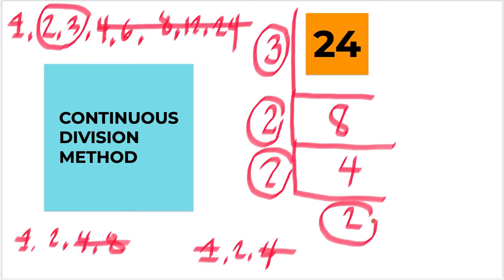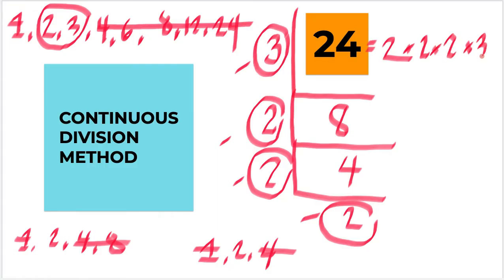Here are the prime factors: 2, 2, 2, and 3. So the prime factors of 24 are 2 times 2 times 2 times 3. Let's check: 2 times 2 is 4, times 2 is 8, times 3 is 24. So these are the prime factors of 24.